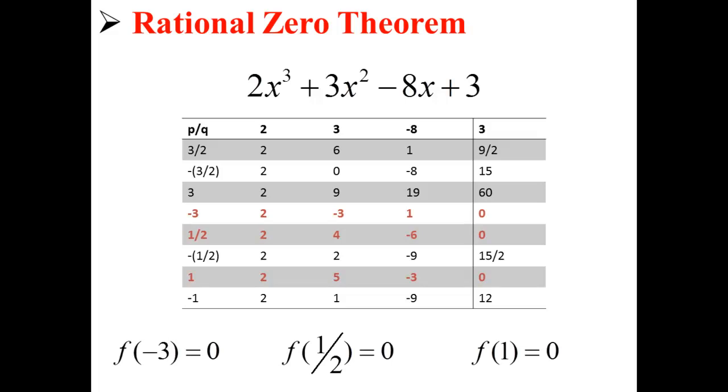That is to say that f of negative 3 is equal to 0, f of 1 half is equal to 0, and f of 1 is equal to 0. Here, we have found our three zeros using the Rational Zero Theorem.